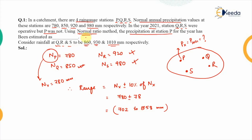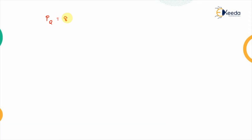Although the method was already mentioned in this problem, you should always first check the range yourself, as it may or may not be given. Once we have the range determined, we write down the known precipitation values: precipitation at Q is 860 mm, precipitation at R is 930 mm, and precipitation at S is 1010 mm.